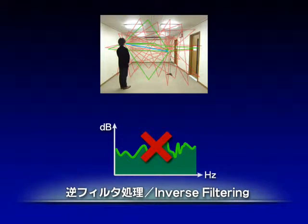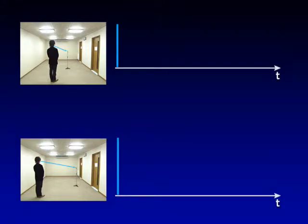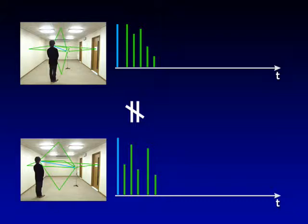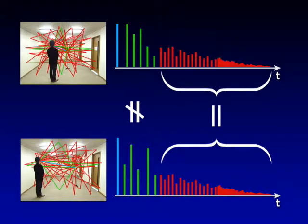Therefore, it is necessary to develop a dereverberation method that is not affected by such changes. Now, let's consider the arrival time of the reflections of two reverberation characteristics with small differences in speaker position. The early reverberation part looks sparse, so small variations in arrival time greatly affect its frequency characteristics. By contrast, the late reverberation part is dense, which means small variations in arrival time do not affect its frequency characteristics to a large degree.